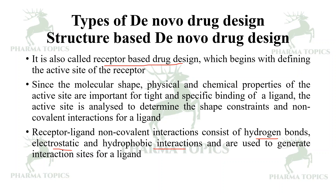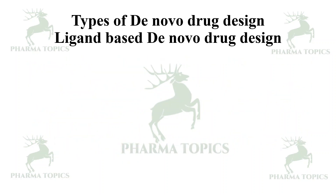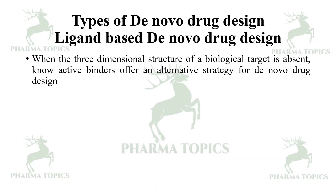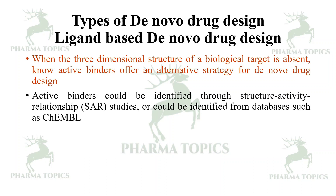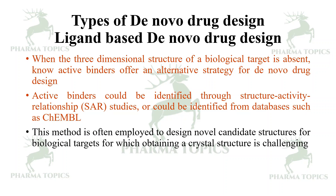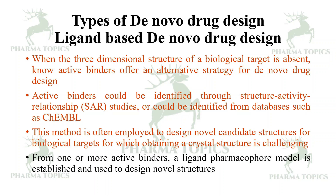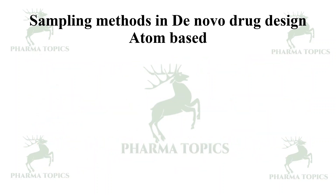In ligand-based de novo drug design, when the 3D structure of the biological target is absent, we use active binders as an alternative strategy. Active binders can be identified through structure-activity relationship studies or from databases such as TEMPLE. This method is often employed for biological targets where obtaining a crystal structure is challenging. From one or more active binders, an elegant pharmacophore model is established and used to design novel structures.